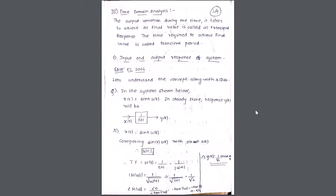Today we are going to cover one of the most critical concepts: time domain analysis and the steady state error. These two concepts are very important from a subject and university exam point of view. Also in competitive exams like GATE, this topic is a favorite — good tricky objective questions can be framed from it. The PDF on screen will be available as a Google Drive link in the description box, so please download it for your reference.